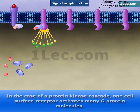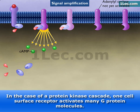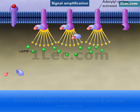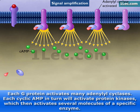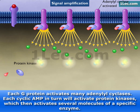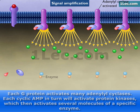In the case of a protein kinase cascade, one cell surface receptor activates many G-protein molecules. Each G-protein activates many adenylyl cyclases. Each cyclic AMP in turn will activate protein kinases, which then activates several molecules of a specific enzyme.